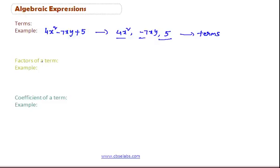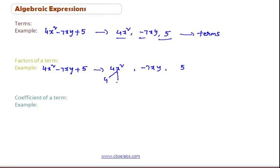Now let us learn about factors. Consider the algebraic expression 4x square minus 7xy plus 5. The terms are 4x square, minus 7xy, and 5. The term 4x square is a combination of 4x and x — so 4x and x are called factors of 4x square. Similarly, minus 7xy can be formed by minus 7, x, and y, so minus 7, x, and y are called factors of minus 7xy. Here, 5 is a constant, so there are no factors other than 5.